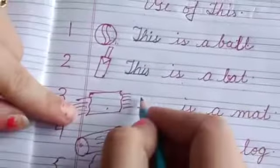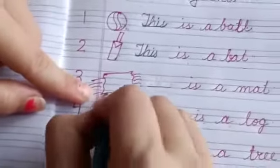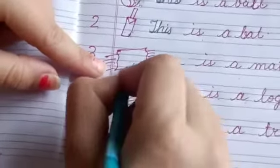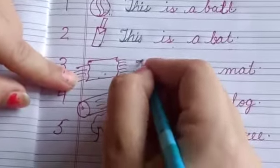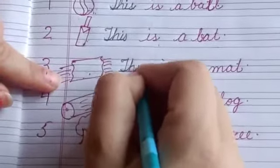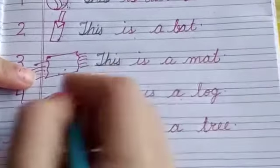Come to the third picture. What is this? This is a mat and the mat is near us. This is a mat.